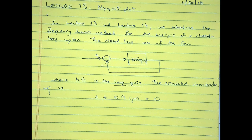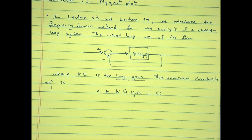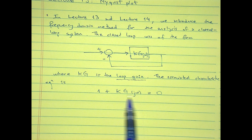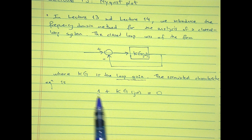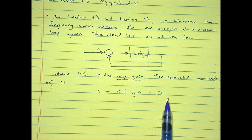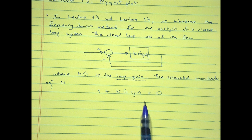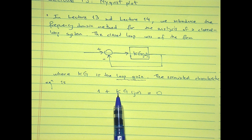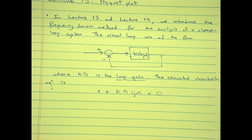We observe that this as a complex number will have certain properties, because I have here 1 and I have 0 here. In particular, when this equation is satisfied at a particular ω, the absolute value of Kg(jω) equals 1, and the phase equals minus 180 degrees — or any multiple.